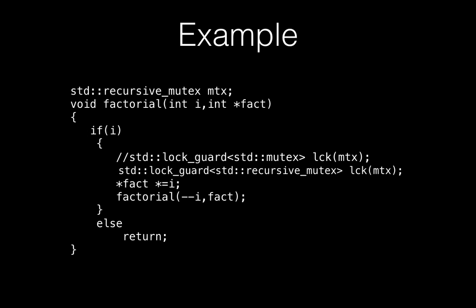You can use lock_guard, which is an STL template class, on this recursive mutex. When you enter the if block, you call factorial recursively if your value is greater than or equal to one. You lock the mutex before entering the critical section, and lock_guard will automatically unlock the recursive mutex when you exit the if block. This is how you can achieve recursion together with a critical section.